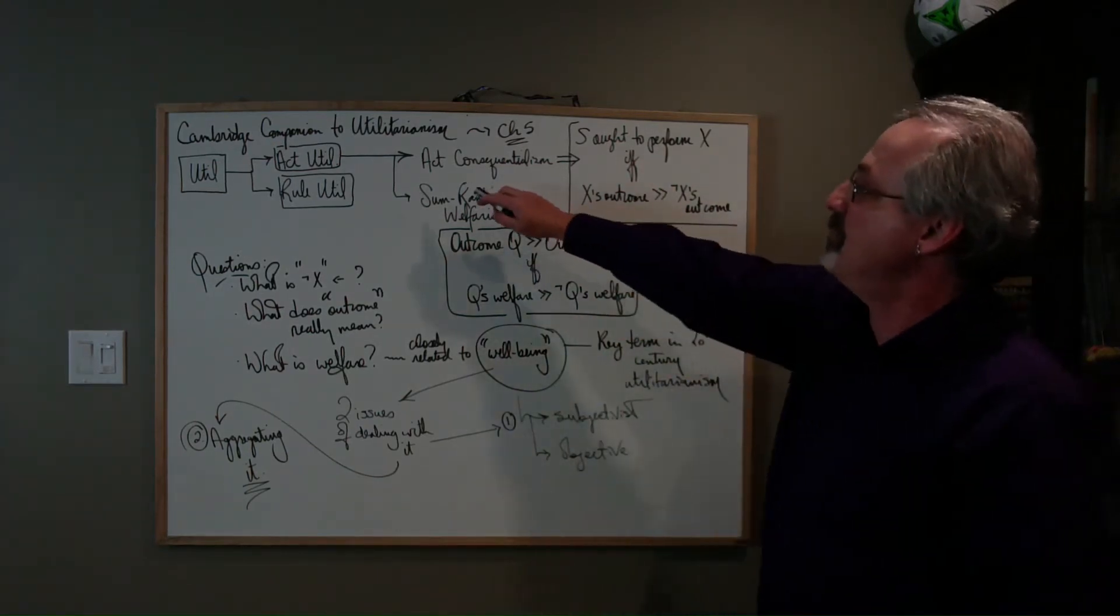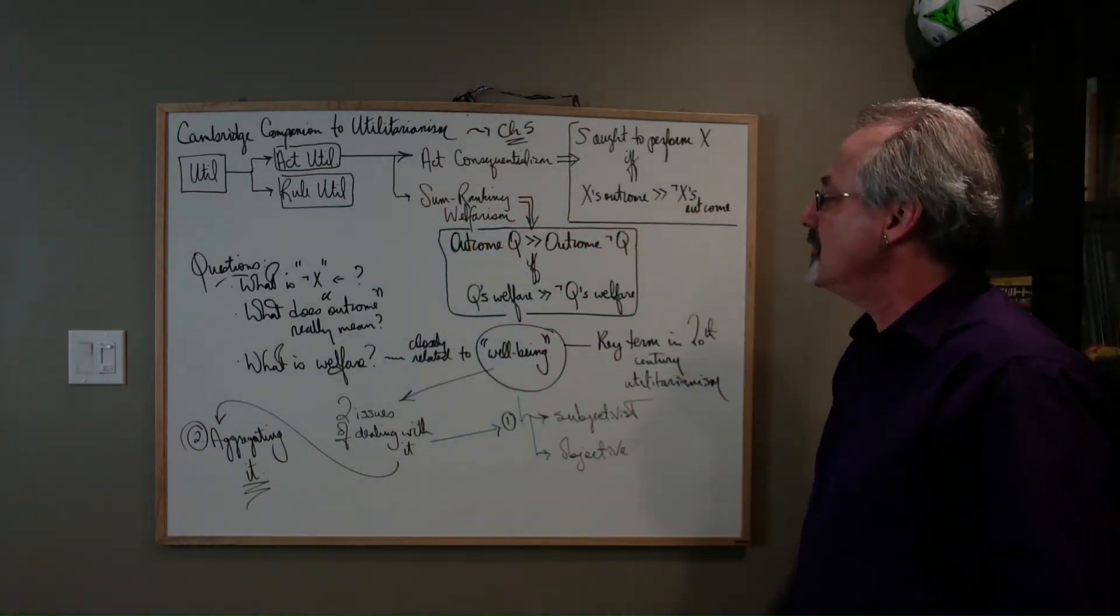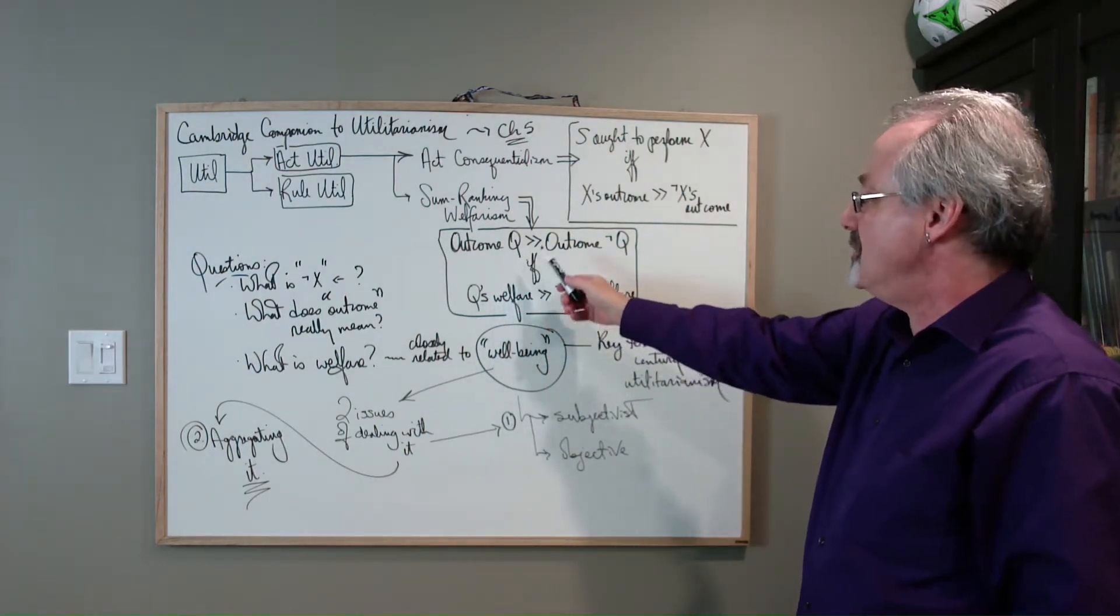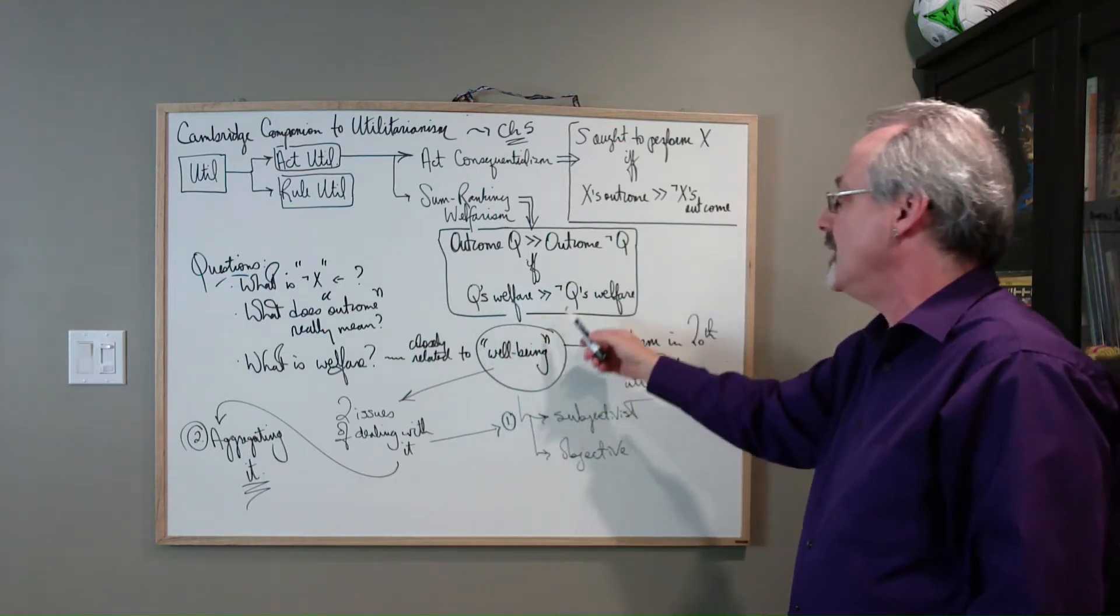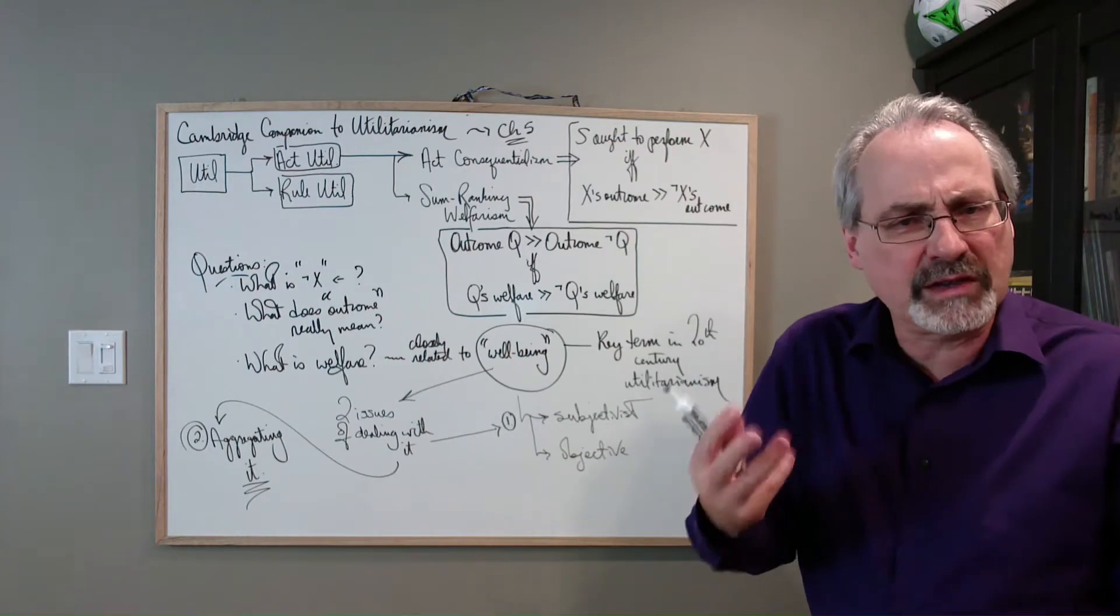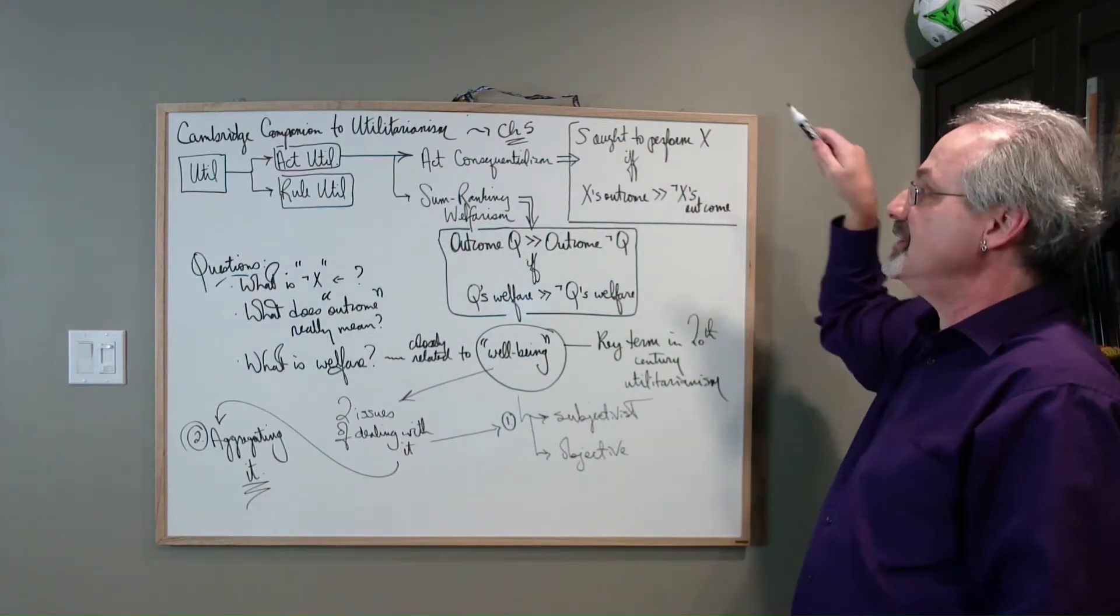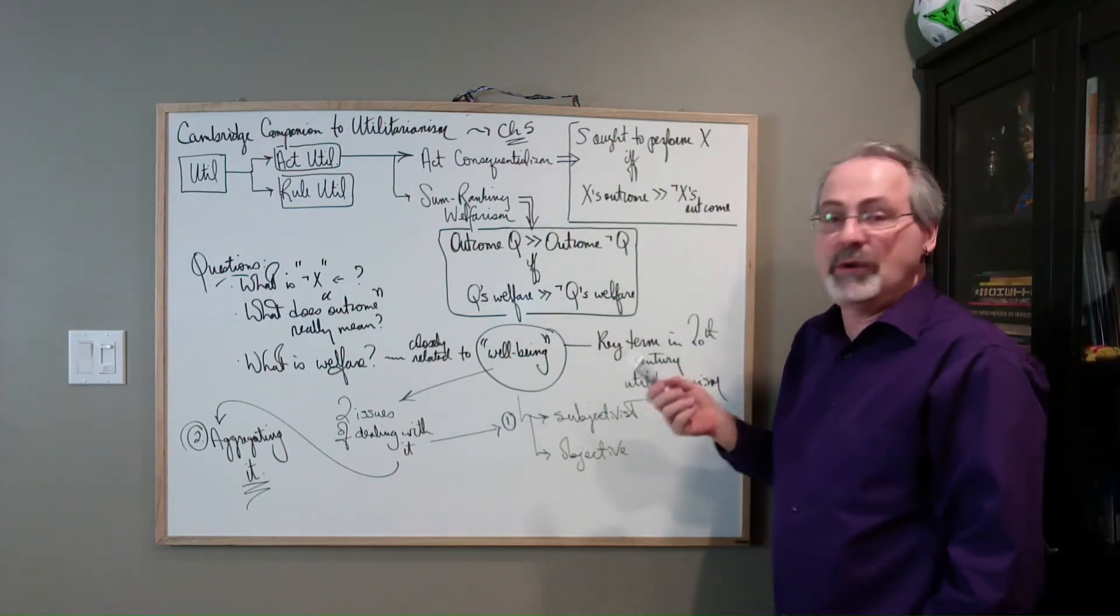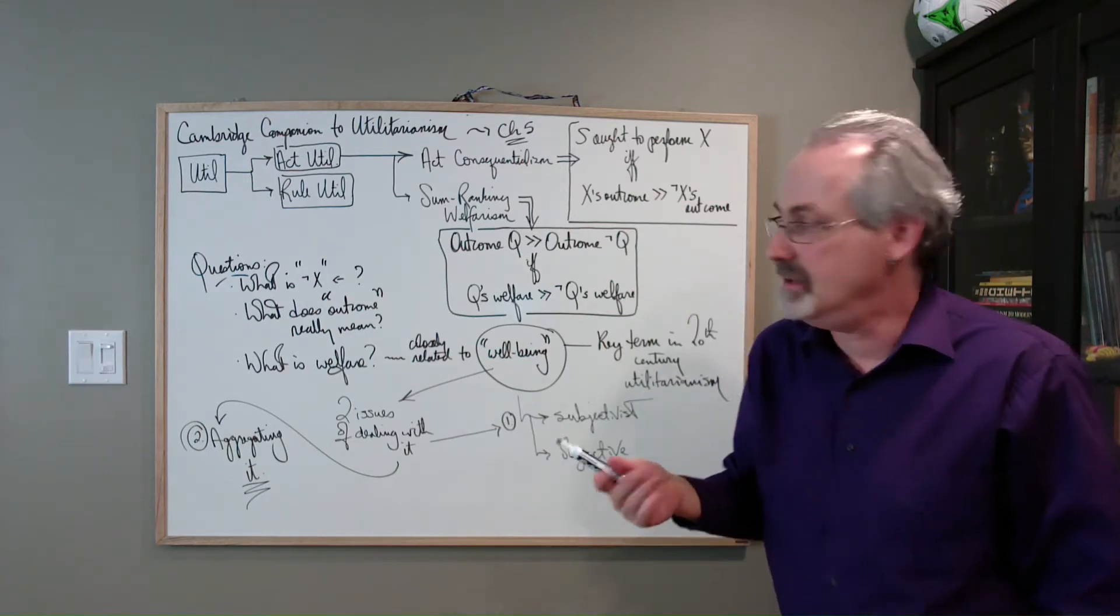So, the second part that act utilitarianism breaks into is sum ranking welfarism, and here it's the outcome Q is better than, or greater than, outcome not Q, if and only if Q's welfare is greater than not Q's welfare. So, there's just a rough schematic of how act utilitarianism breaks down into act and sum ranking, and in this sense, we've got a number of concepts to try and clarify.